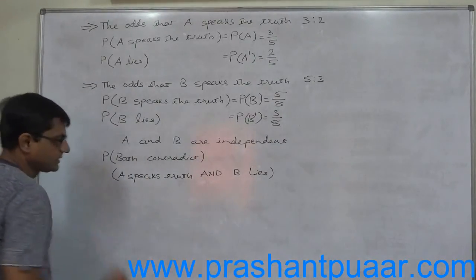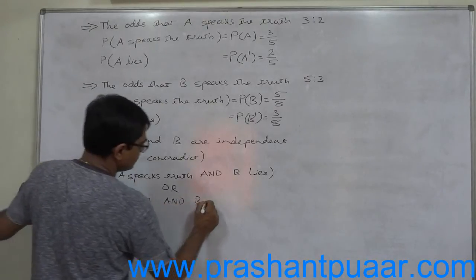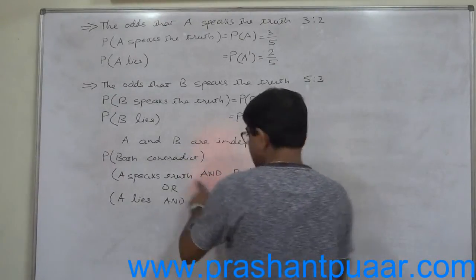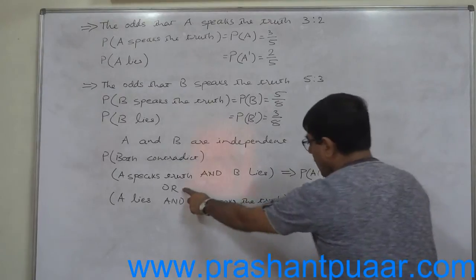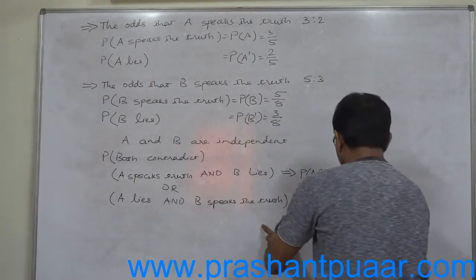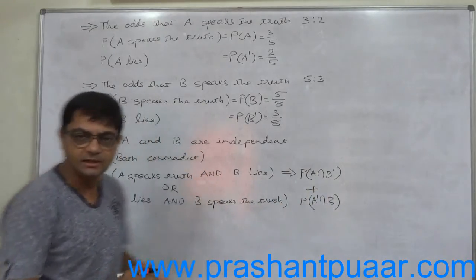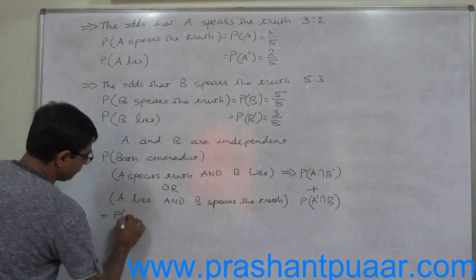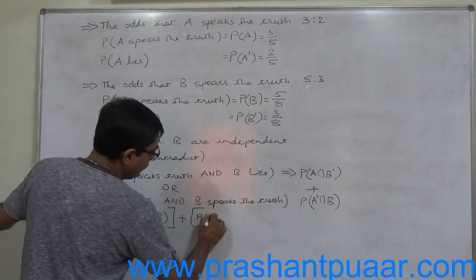So the probability of contradiction equals the probability that A speaks truth and B lies, or A lies and B speaks the truth. Using set notation: P(A intersection B complement) plus P(A complement intersection B). Since A and B are independent events, this equals P(A) into P(B complement) plus P(A complement) into P(B).